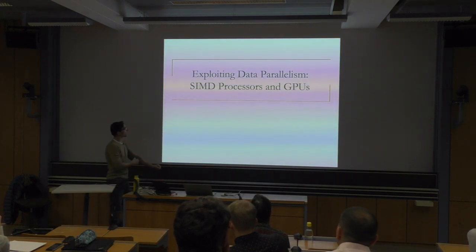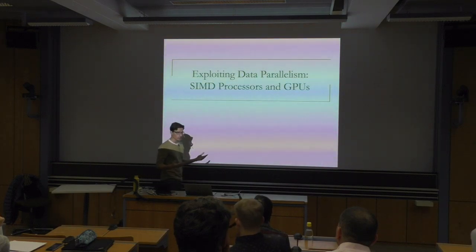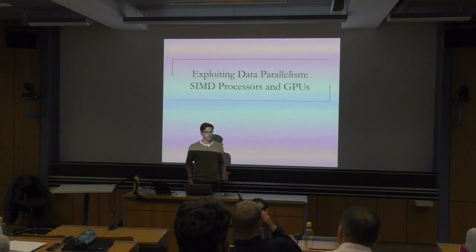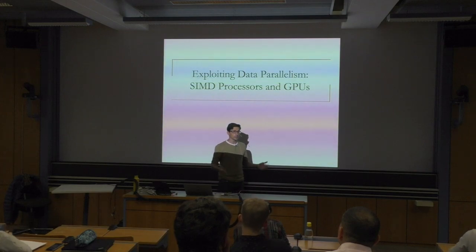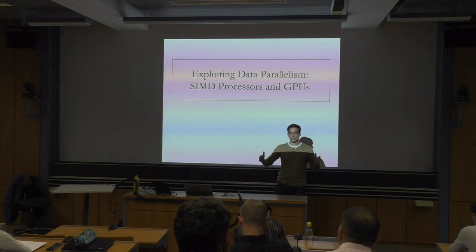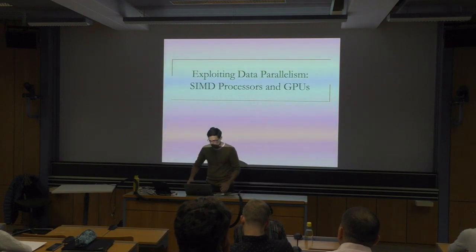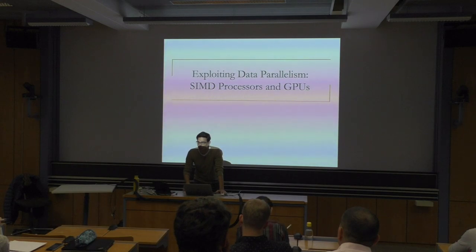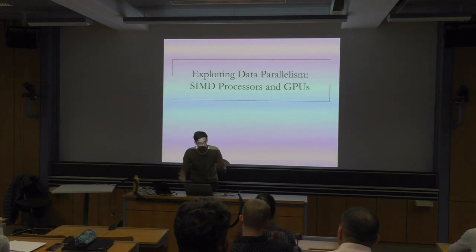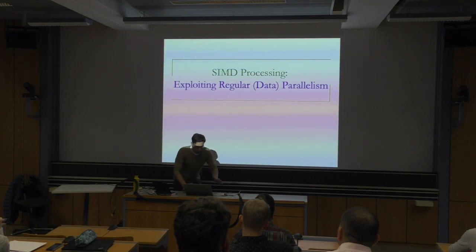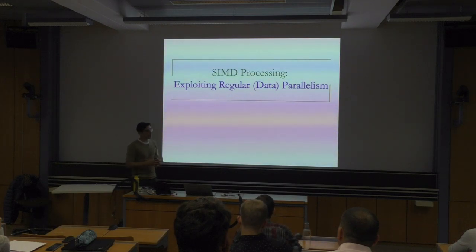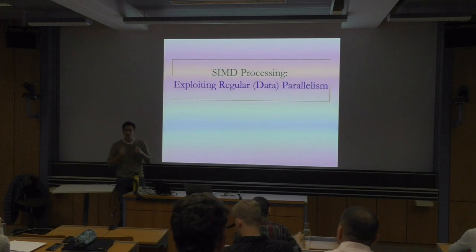So essentially, what are SIMD processors and GPUs? They are data parallel machines - machines that are able to execute computation on multiple data instances at the same time. What we exploit here is what is called data parallelism. As you will see, this is not the only thing - in GPUs we can also have some sort of task parallelism. But in principle, they are especially good when this data parallelism is regular.